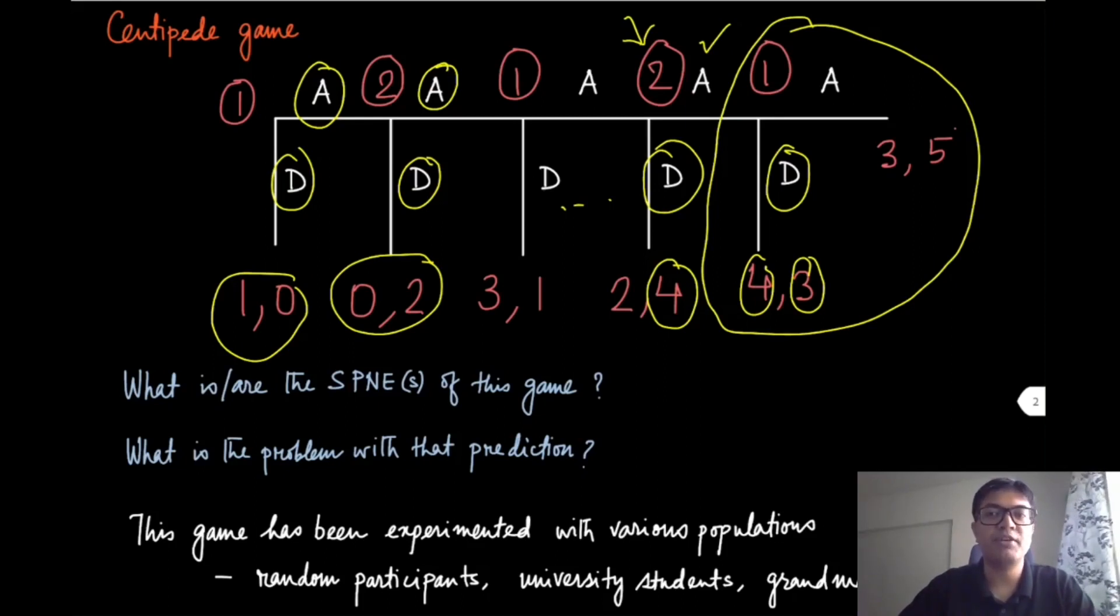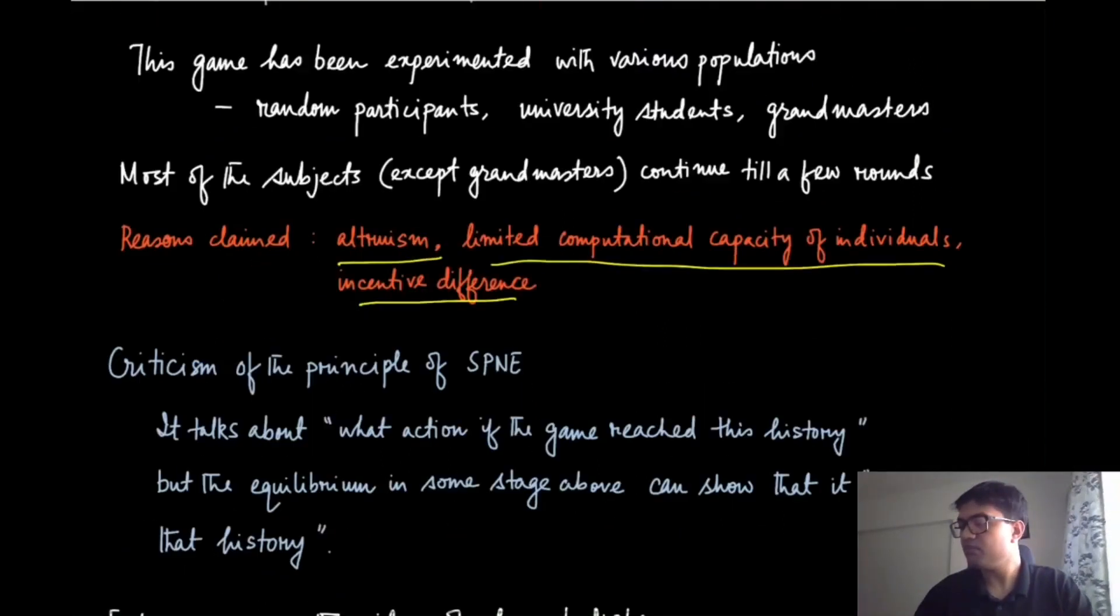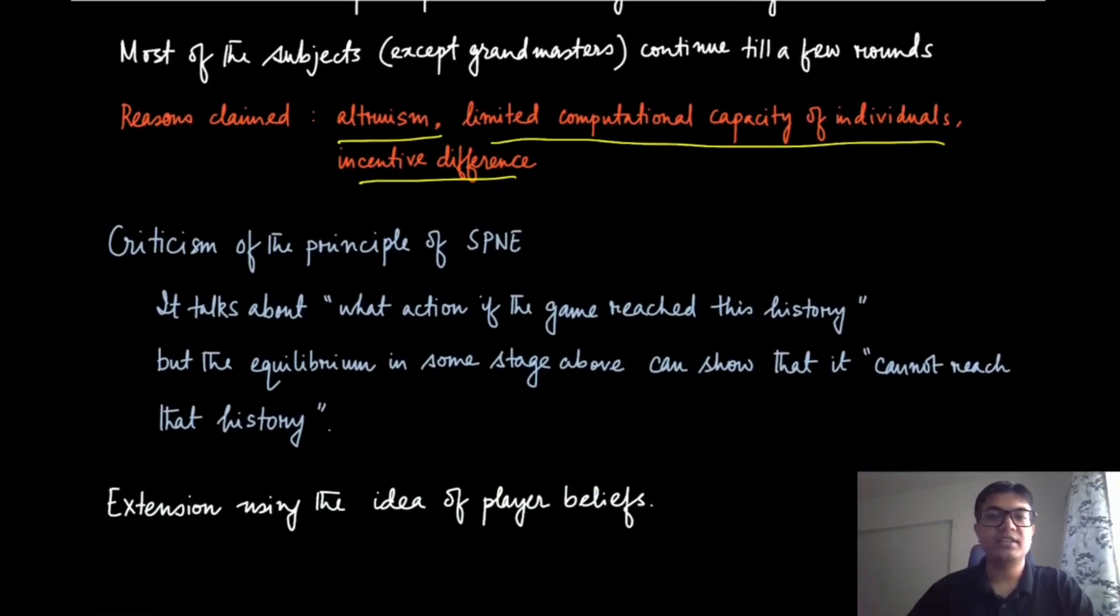When the players have much larger stakes—much larger utility when they play one thing versus another—then they do think a little more carefully and try to give a better choice, and that leads to closer-to-SPNE performance. So that was the qualitative criticism about the idea of SPNE and that it